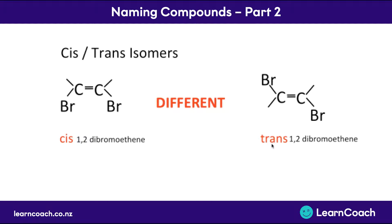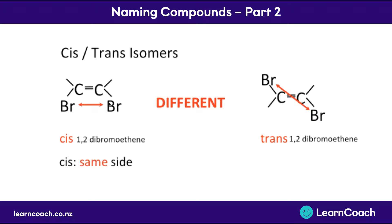And we add 'trans' for atoms that are on the opposite side of the double bond. One way to remember this is that 'cis' — for sisters — is on the same side. Sisters go together; they're on the same side of the double bond. But 'trans' means opposite — whether you're talking about a transalpine plane, meaning it's on the opposite side of the Alps, or transgender, which is the opposite gender. Trans means opposite, so they're on different sides. The same side is cis; the opposite side is trans.